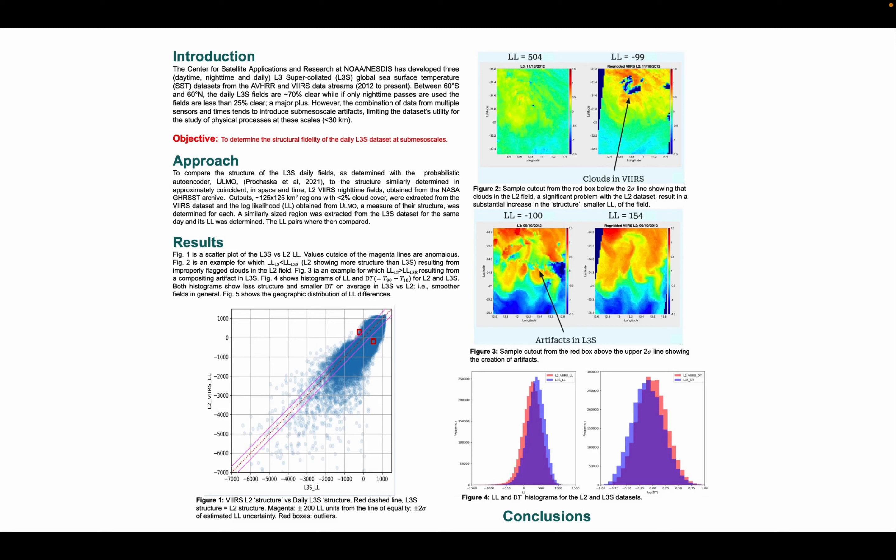In the example below this one, the log-likelihood for the L3S cutout on the left is smaller than the VIRS log-likelihood. This represents the creation of artifacts or the addition of structure in the dataset compared to the VIRS data.